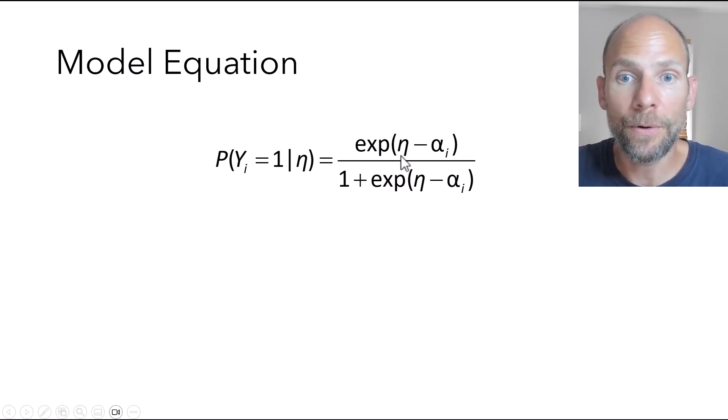Conversely, if your ability eta is higher than the item difficulty for item i, then your probability of solving the item will be above 0.5. And if your ability is the same as the item difficulty, your chances of solving the item will come out as 0.5. That's predicted by this model.